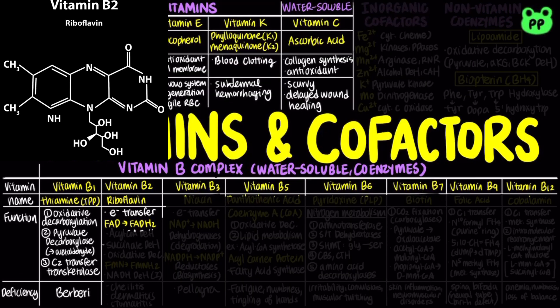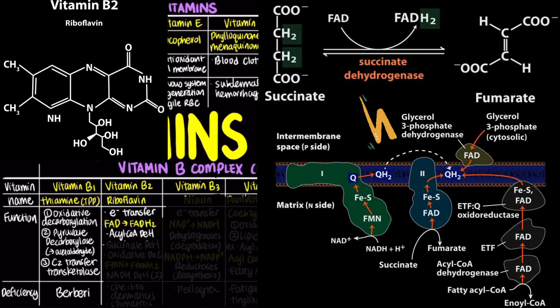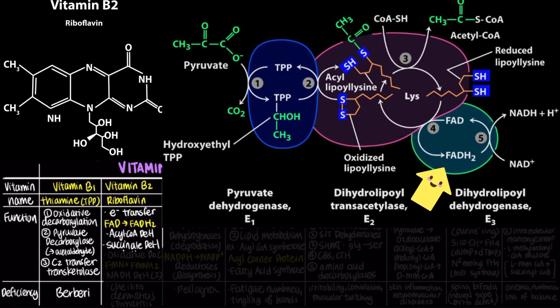Oxidative degradation reactions coupled to FAD reduction include acyl-CoA dehydrogenase, which catalyzes the initial step of fatty acid beta-oxidation, and succinate dehydrogenase, or complex II of the electron transport chain, which participates in both the citric acid cycle and oxidative phosphorylation, oxidizing succinate to fumarate. FAD is also a prosthetic group of enzymes involved in oxidative decarboxylation.